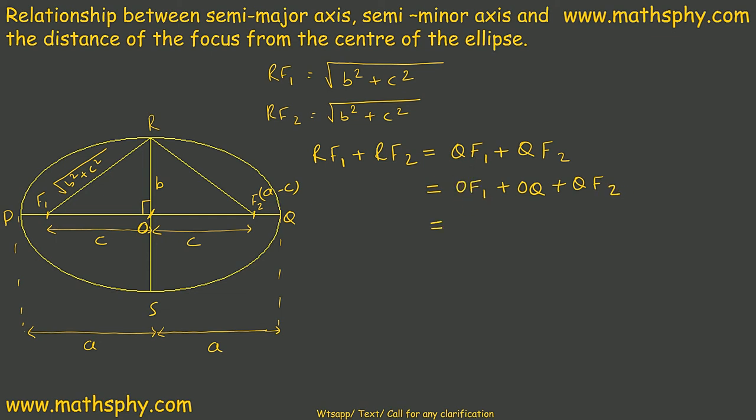Now, OF1 is C plus OQ is A, from center to the vertex is A we know it, plus QF2 is A minus C. So this comes to C, C cancel becomes 2A.